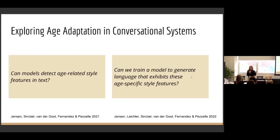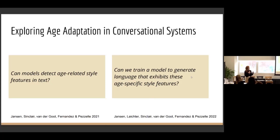As Dimitra mentioned, in order to do this, we need to break it down into smaller subtasks. First of all, if we're interested in making a model adapt to style-specific features, we want to ask: can we detect those features in text, in order to both evaluate whether we create models that do that and in order to train these models?